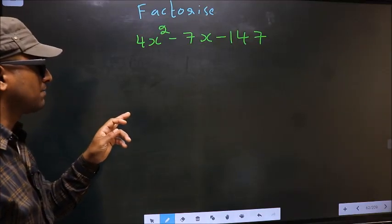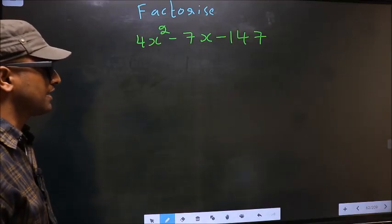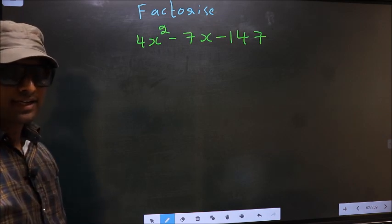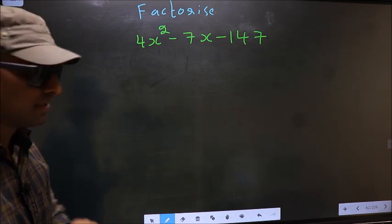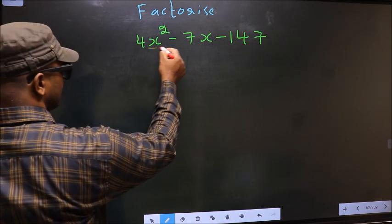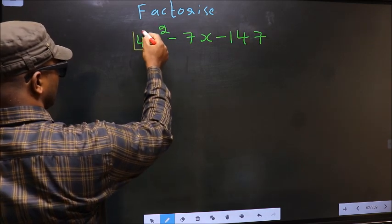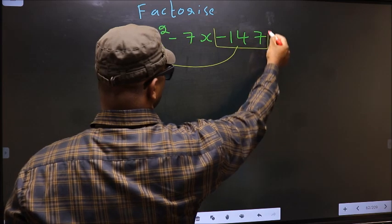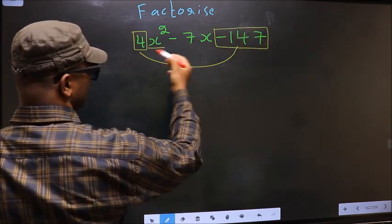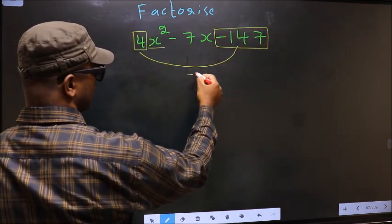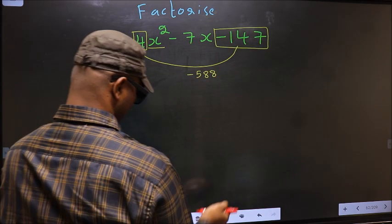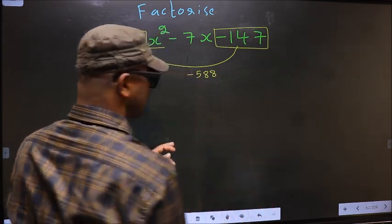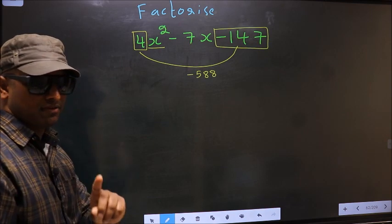Factorize 4x² - 7x - 147. To factorize, step 1: the coefficient of x², that is 4 here, should be multiplied to the constant -147. So 4 into -147, you get -588. This is your step 1.